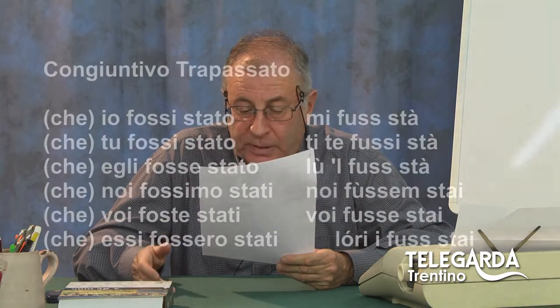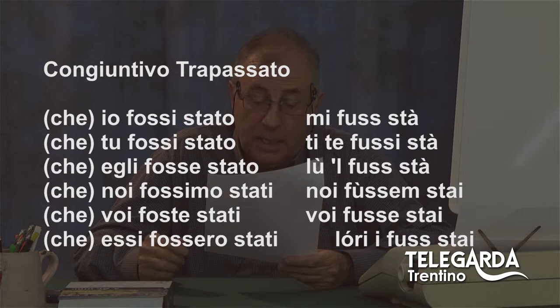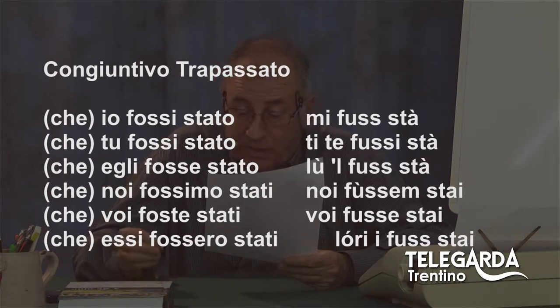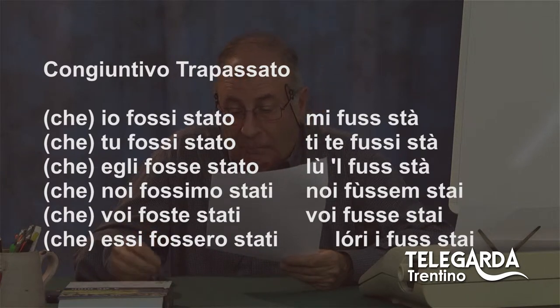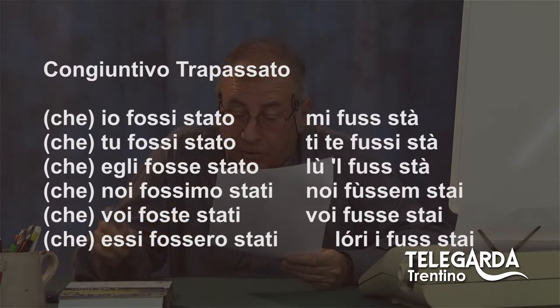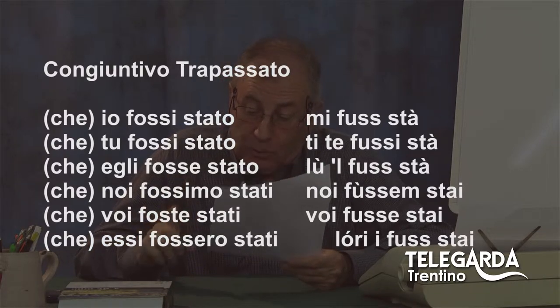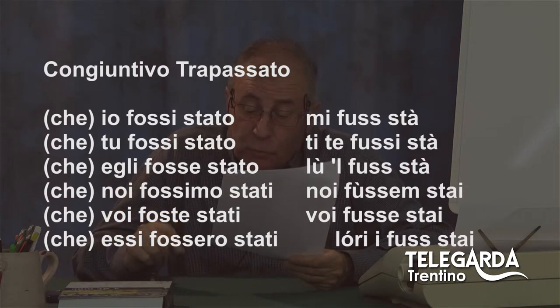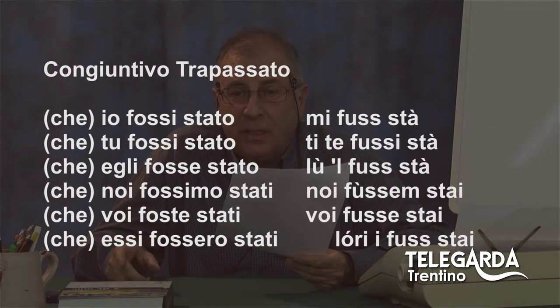Passiamo al congiuntivo trapassato. Non si fa altro che aggiungere stato. Che io fossi stato, che tu fossi stato, che egli fosse stato, che noi fossimo stati, che voi foste stati, che essi fossero stati. Si aggiunge sta in dialetto: che mi fus sta un bravo ingegnere, che ti te fussi sta un bravo ingegnere, che l'ul fus sta un bravo ingegnere, che noi fussem, accento tonico sulla U, stai bravi ingegneri, che voi fusse stai dei bravi ingegneri, che l'ori i fus stai dei bravi ingegneri.